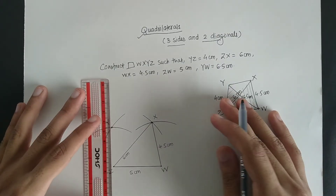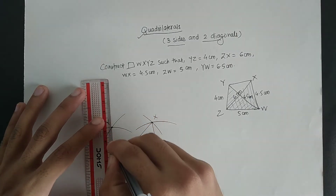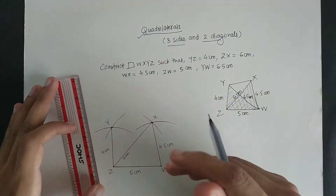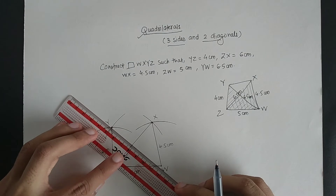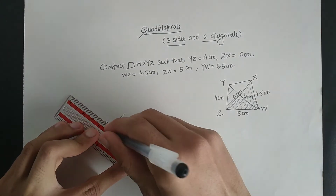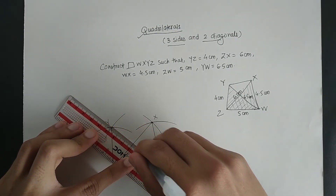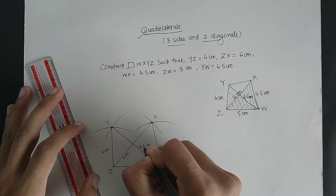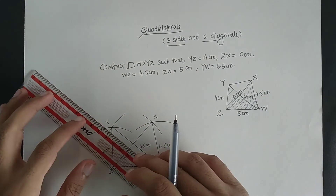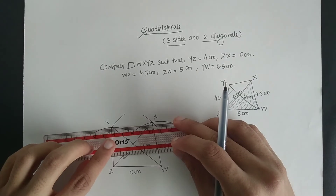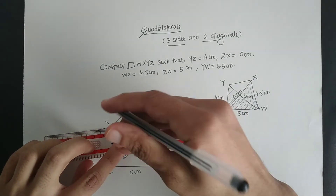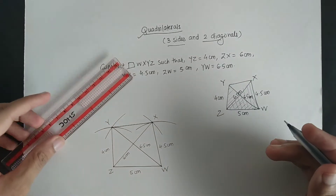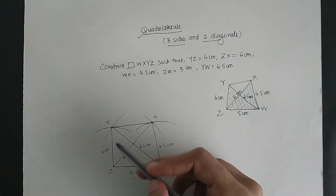The point Y and Z are joined, and the length of YW — which is my diagonal — is 6.5 centimetre. Now I can easily join point Y and point X. And in this way I have drawn the quadrilateral WXYZ.